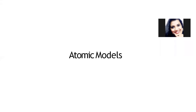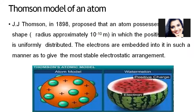Atomic models. In our previous class we studied about the discovery of proton, neutron, and electron. In this class we will learn about atomic models. Atomic models are the arrangement of positive and negative particles which were discovered earlier by different scientists.